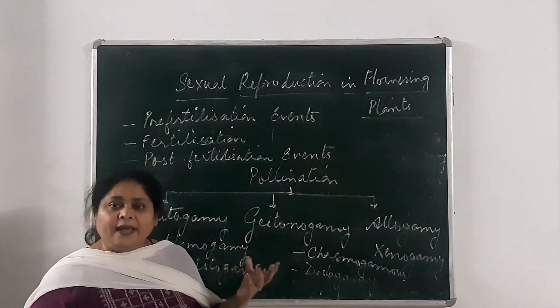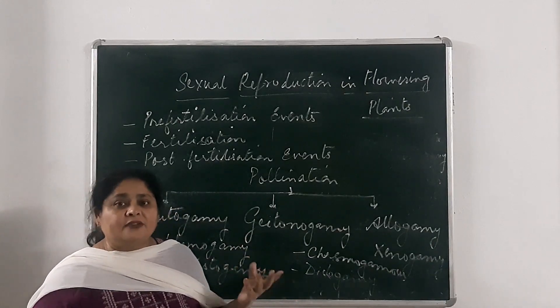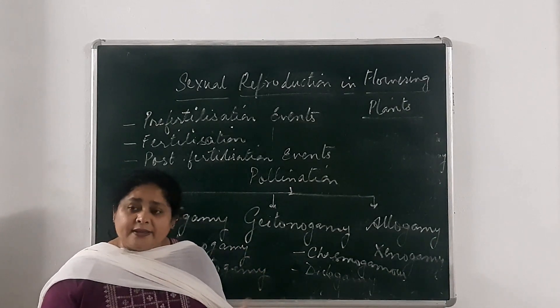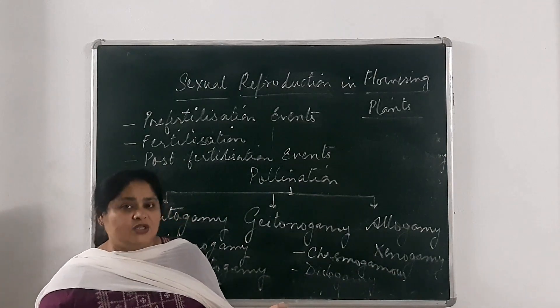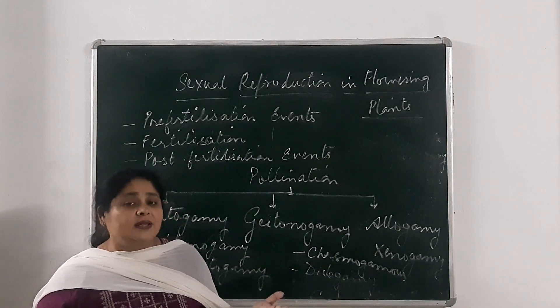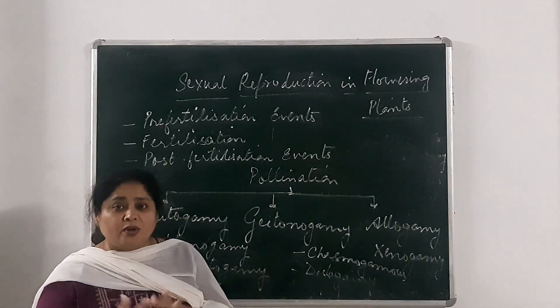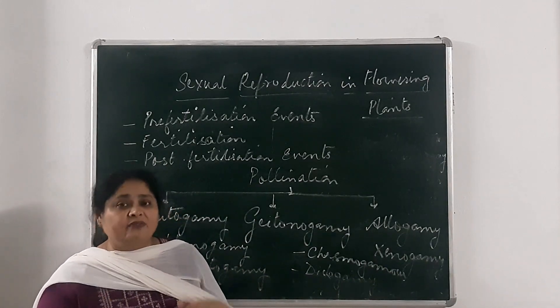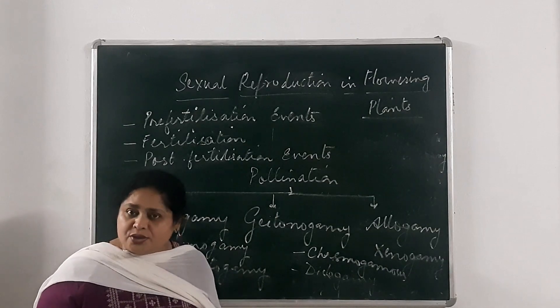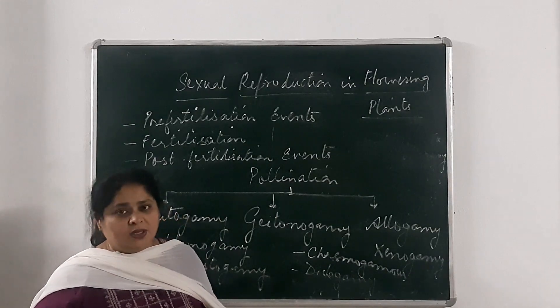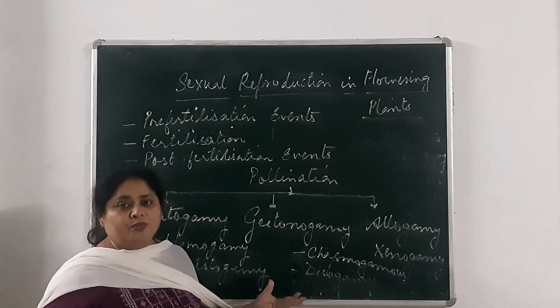Another characteristic is that some flowers are made unisexual by nature, so that cross-pollination is ensured. This promotes variation and evolution through sexual reproduction.